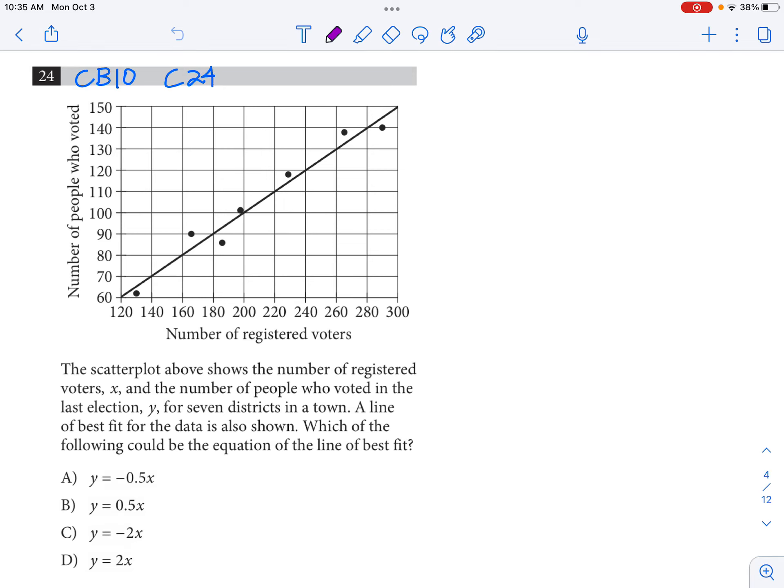College Board 10 calculator allowed number 24. So the first thing we see is a graph here. It looks like a scatterplot with a line of best fit.